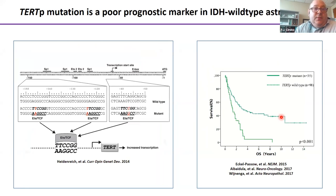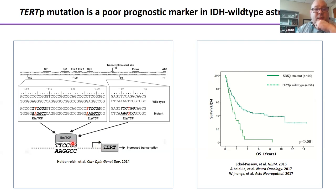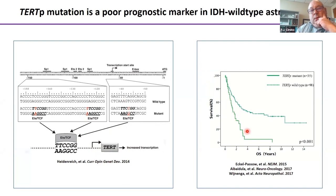Another prevalent alteration is a TERT promoter mutation — a single nucleotide at one of two positions within the TERT gene promoter, which encodes telomerase. These mutations cause over-expression or increased transcription of telomerase. Cancer generally needs either TERT promoter mutations or an alternative lengthening of telomeres phenotype. When applied to lower-grade gliomas, TERT promoter mutants have much lower survival than their TERT wild type counterparts.